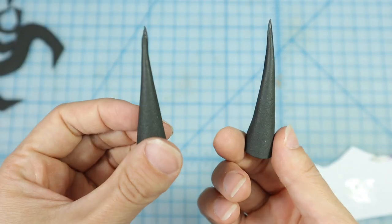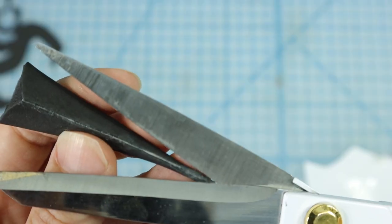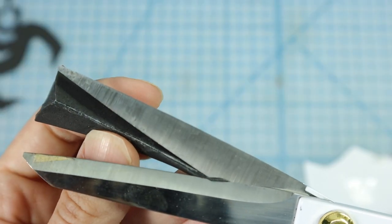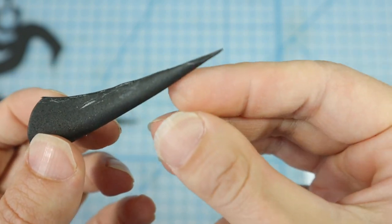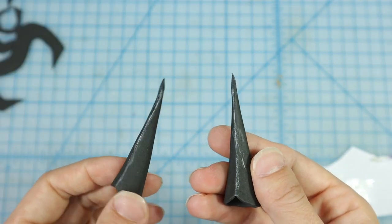And I repeated the same steps on the other horn. To make the tip extra pointy, I removed a little bit of material from right at the end. And that gave me a little bit more of a point.